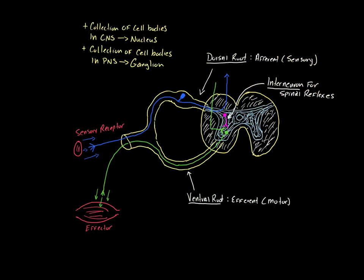Just to remind you how information leaves the spinal roots: you have a dorsal root at the back and a ventral root toward the front. Efferent motor information comes out of the spinal cord through the ventral root to effectors, primarily skeletal muscle. Sensory information comes in through the dorsal root. Let's now talk about the major spinal cord syndromes.